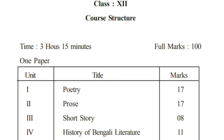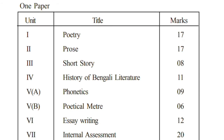There is prose. There are short stories. There is art. There is history of Bengali literature — 11 marks. There is politics — 9 marks. There is poetic meter — 6 marks. Essay writing — 12 marks. Internal assessment — 20 marks. Total: 100 marks.